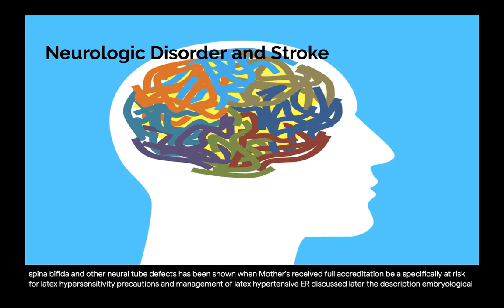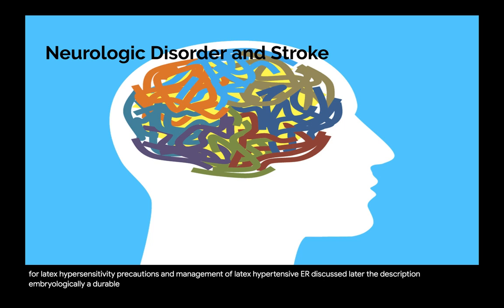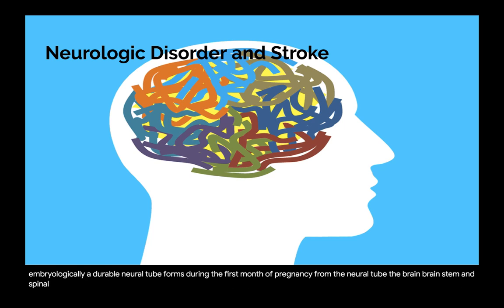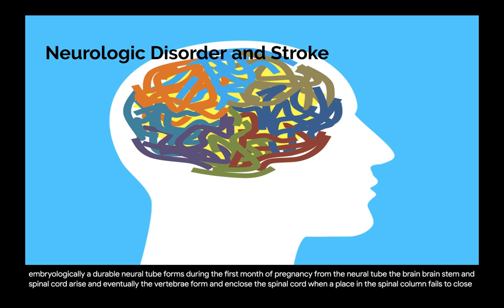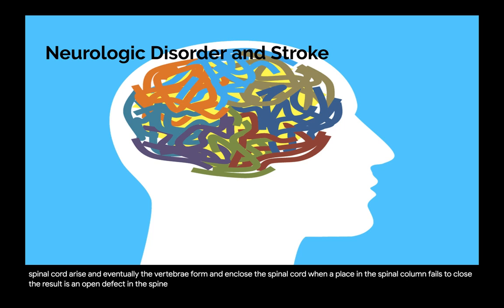Embryologically, a neural tube forms during the first month of pregnancy. From the neural tube, the brain, brain stem, and spinal cord arise, and eventually the vertebrae form and enclose the spinal cord. When a place in the spinal column fails to close, the result is an open defect in the spinal canal, which is called spina bifida.